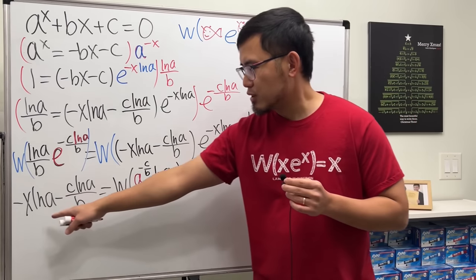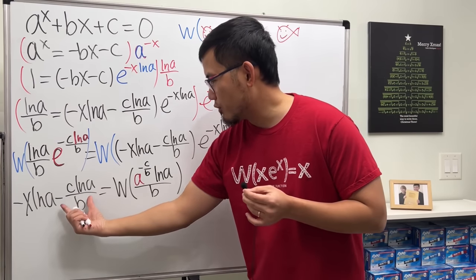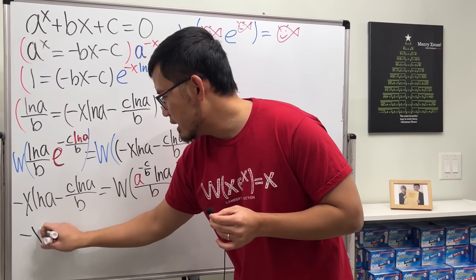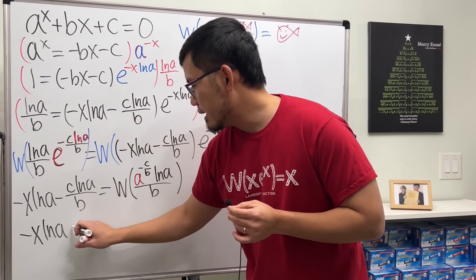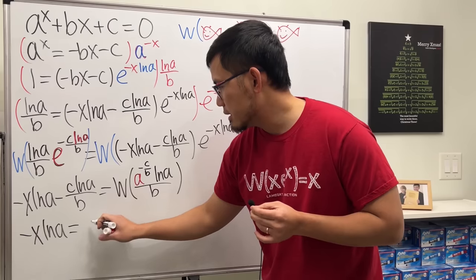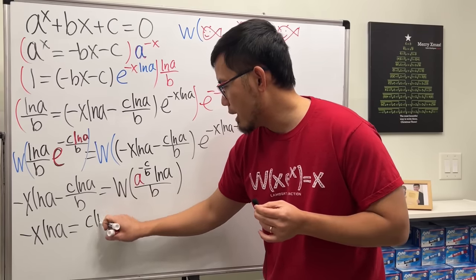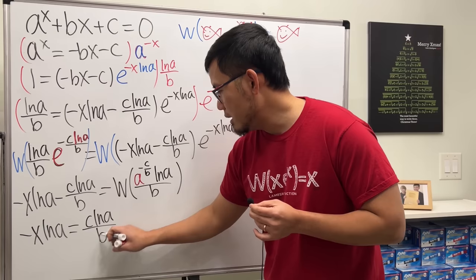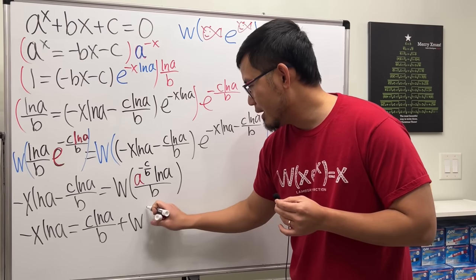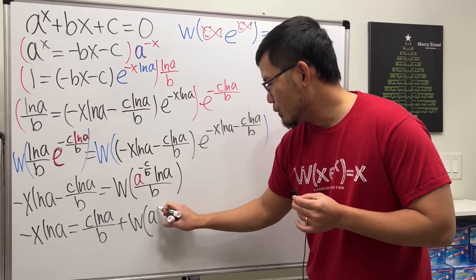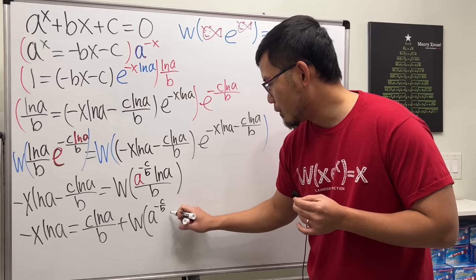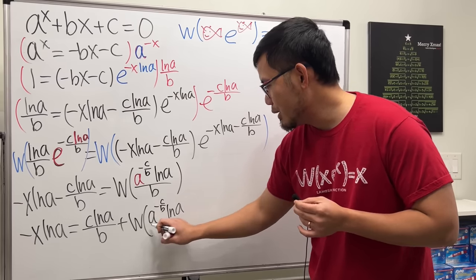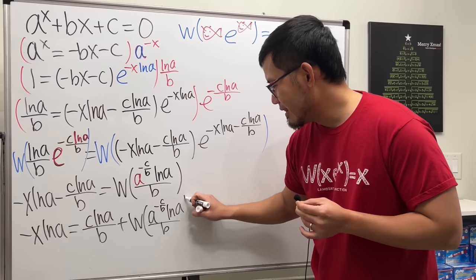Now, we just have to solve it. And the rest is just pretty straightforward. Move this to the other side. So we get negative X ln a. And then that will be plus, like positive. So C ln a over b. And then plus W of a raised to the negative C over b power. And then times ln a over b. Like so.